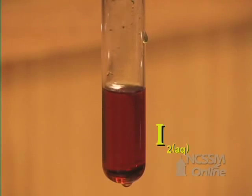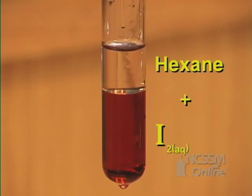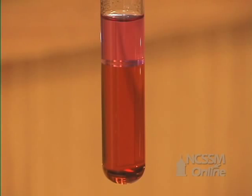We can test for the fact that iodine is actually being produced by adding a non-polar solvent like hexane. If we shake the solution, the iodine will dissolve in the hexane, producing a characteristic purple color in the hexane layer.